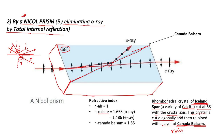Calcite is an anisotropic crystal. As the light passes through a calcite crystal, it is split into two rays — it will suffer double refraction. The two rays will be the ordinary ray and the extraordinary ray. The ordinary ray here will have a refractive index of 1.658, and the extraordinary ray will have a refractive index of 1.486.